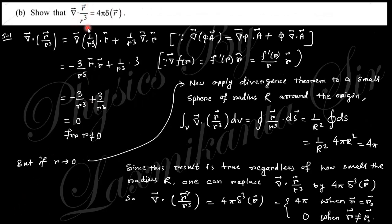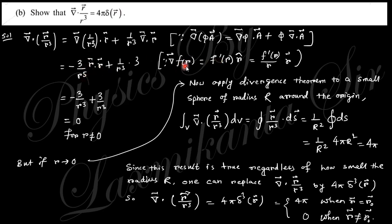The next question says: the divergence of R-vector divided by R³ equals 4π·δ(R). Using the vector identity: div(φA) = grad φ · A + φ div A, where φ = 1/R³ and A = R-vector. Applying this formula gives two terms. The gradient of 1/R³ is a simple derivative with respect to R with R-cap, so grad of a function of R can be written as f′(R) · R-cap, where R-cap = R-vector/R.